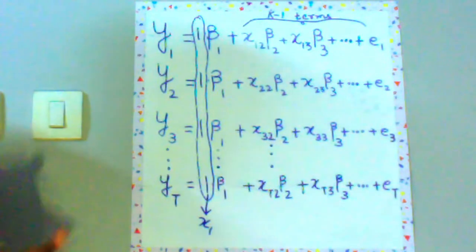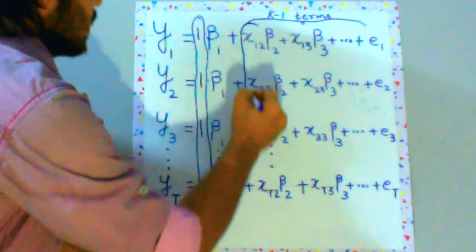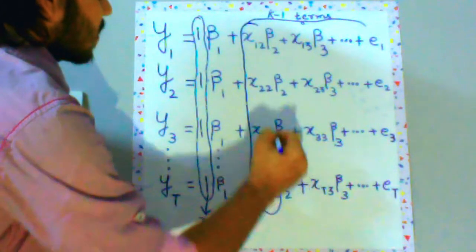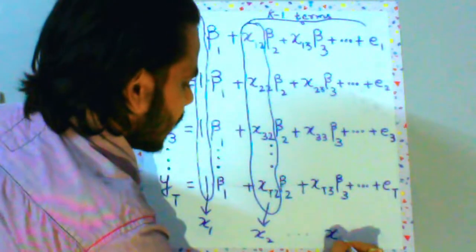You can denote these values as x1. Now this x1 will be a vector. Similarly you can denote these values as x2 and so on. This goes on till xk.